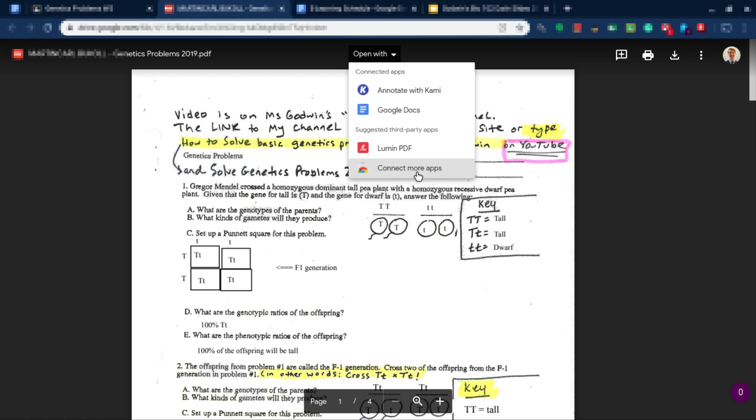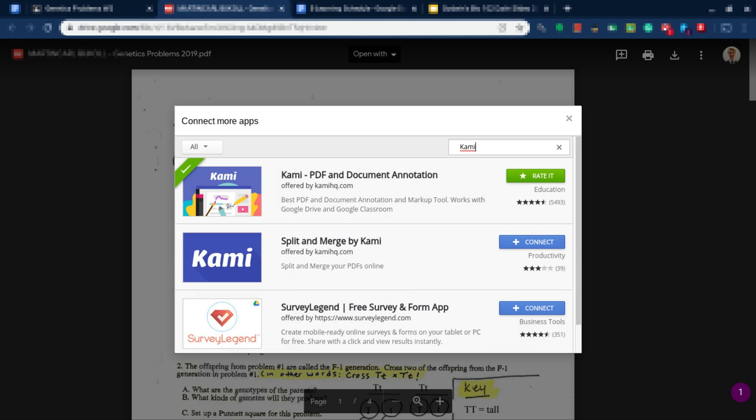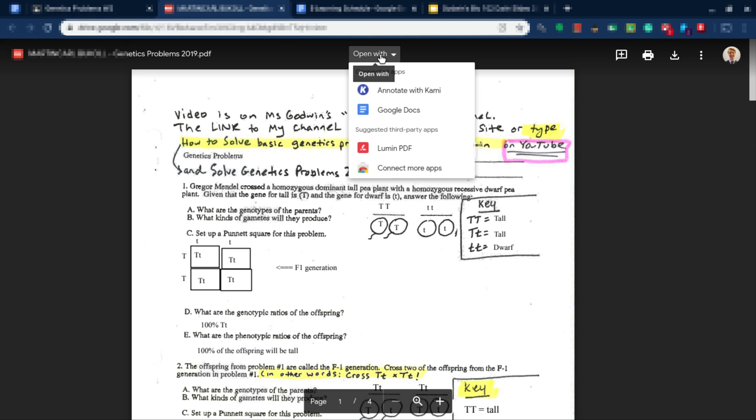Now you might not have Kami, and if you don't, click on Connect More Apps and just search for Kami. It's going to be the first one that pops up, Kami PDF and Document Annotation. Just click on Connect, but I already have it because I installed it. Alright, go back here and click Annotate with Kami.